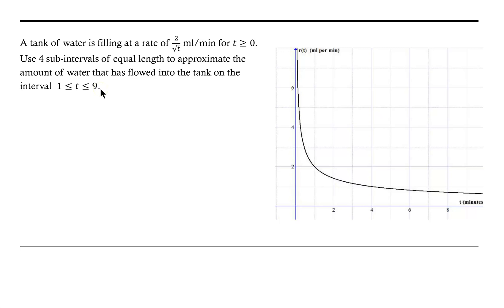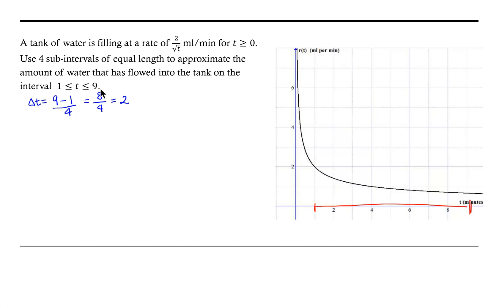So we want four subintervals, so our change in t, or the size of an interval, will take the length of the total interval from 1 to 9 and cut it into four equal partitions. 9 minus 1 is 8, divided by 4 is 2. So when I look at my graph here, I'm looking at the interval on the t-axis, on the horizontal axis, from 1 to 9. We want four equal-sized intervals of length 2.